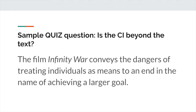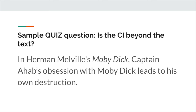Let's take a look at some more examples. Is this CI beyond the text? In Herman Melville's Moby Dick, Captain Ahab's obsession with Moby Dick leads to his own destruction. Even if you've never read the text, you can immediately identify whether or not it meets our core criteria. And in this case, you can see the red flags immediately. This is not beyond the text — this is an argument about Captain Ahab and his obsession with Moby Dick, which are clearly characters and plot points within the novel. Note that this thesis has the kernel of a beyond-the-text idea — it could easily be abstracted to make an argument about the dangers of obsession more broadly. But it's not phrased in that beyond-the-text way, and so it does not meet our criteria.